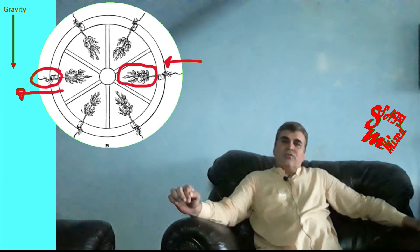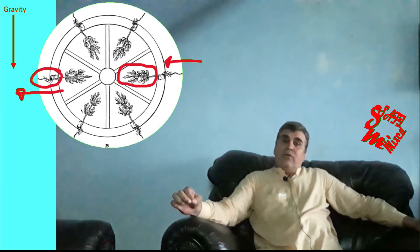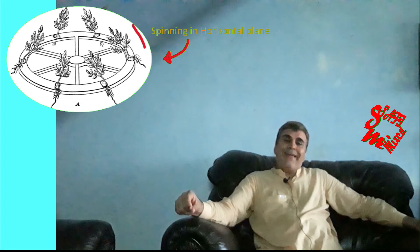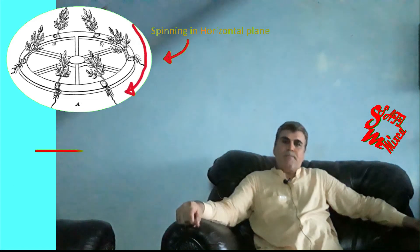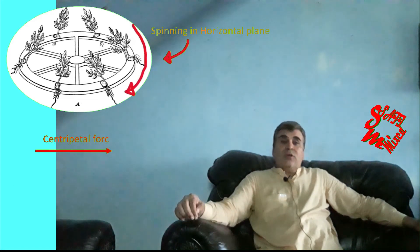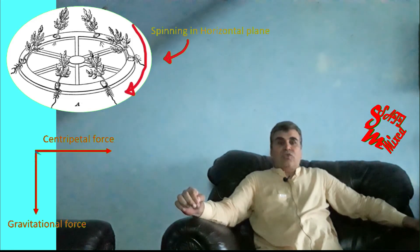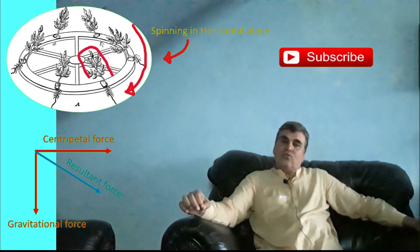Next, he set up a similar structure with the wheel horizontal and rotating at 250 rpm, so that the seedlings were influenced by both the gravitational force of the Earth and the centripetal force simultaneously. In this case, the growth was at an angle of 80 degrees to the vertical, the shoot upward and inward and the roots downward and outward.